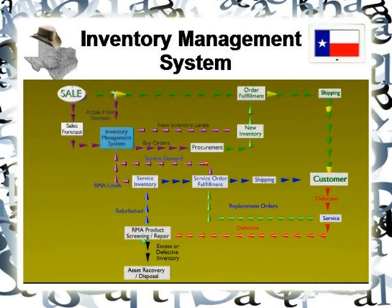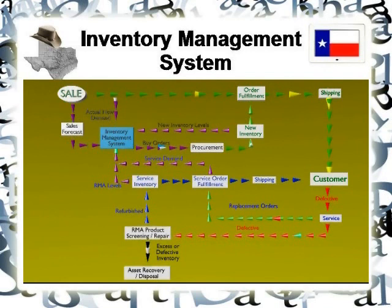The green lines represent your demand, the blue lines are the demand for services, and there's also a set of black lines representing what most people would call shrinkage — how much inventory you're losing, how often you have to recycle your inventory. All of this can be turned into calculations that feed back into your inventory management system.